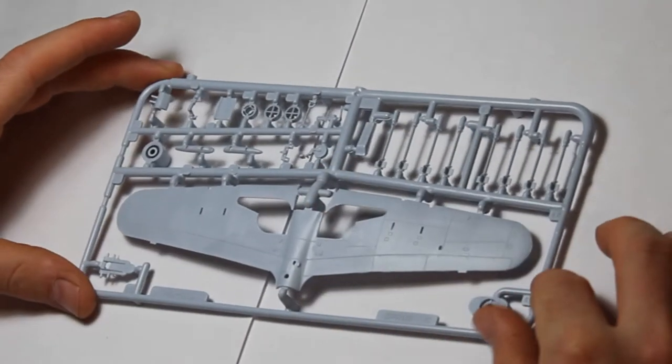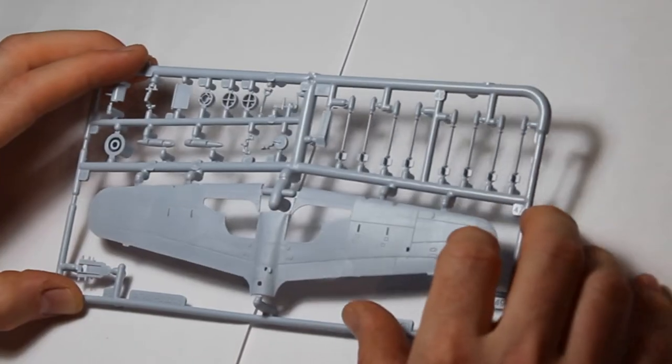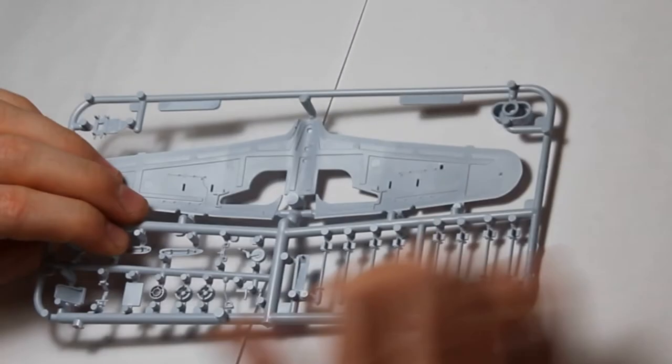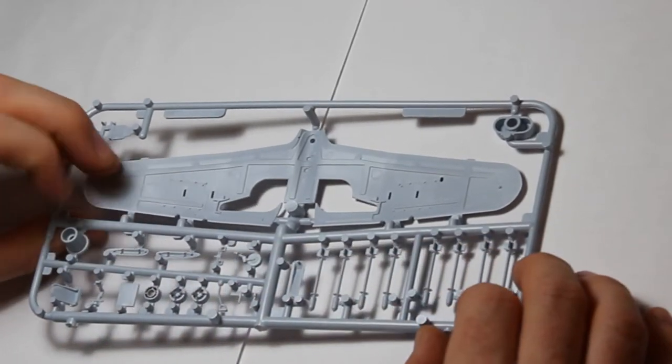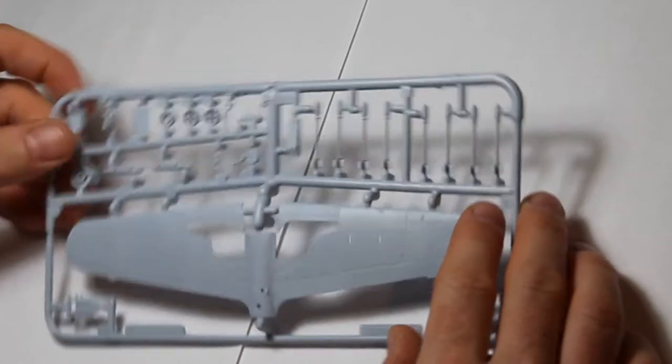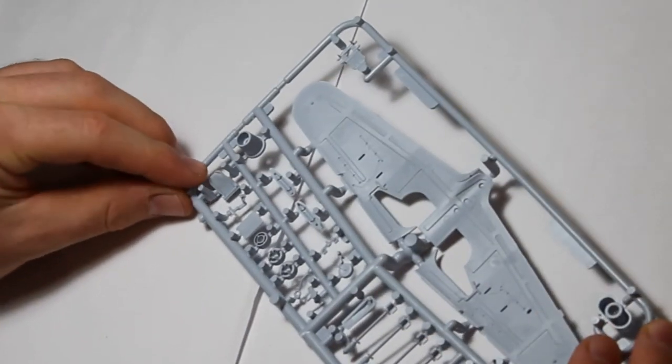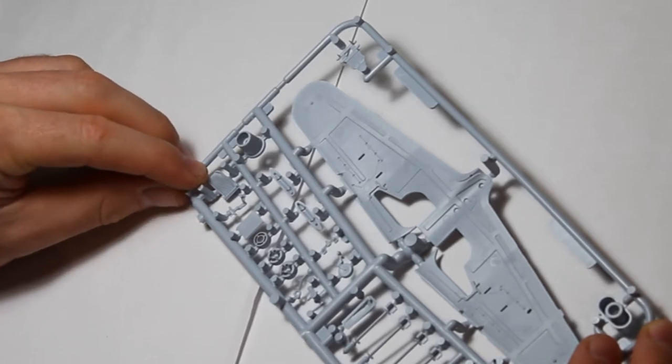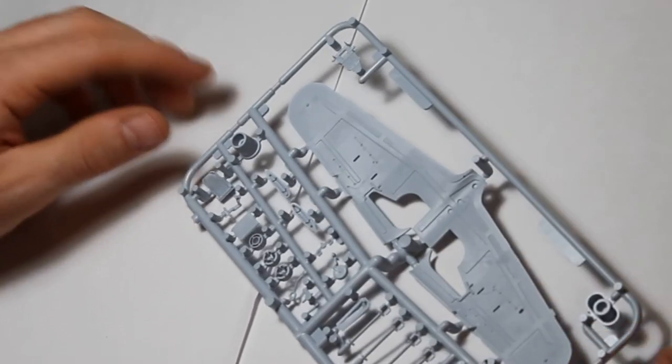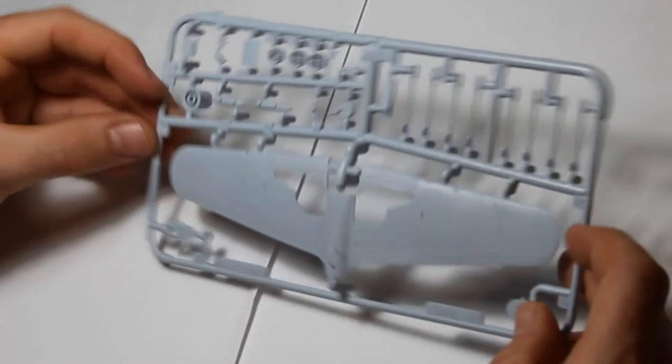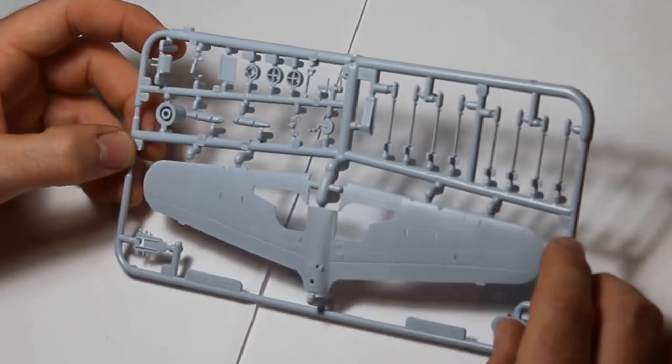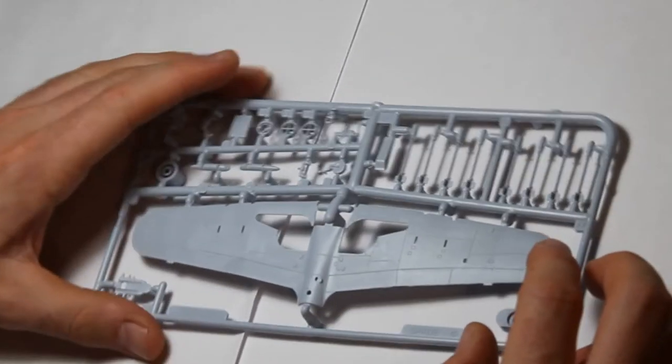That's very nice. And then we've got the last sprue with the lower wing. The rockets. Look very much in scale to me. Quite thin. Very well molded. Look very interesting. Tail wheel and a few other bits and bobs. Nice seat there with a bit of detail. Fabric detail. Which is very nice. And all in all, this looks quite the part of a Typhoon.